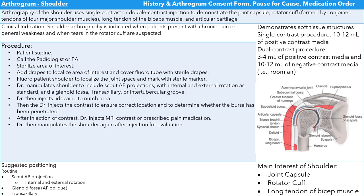For the procedure, the patient is going to be supine. You'll call your doctor, sterilize the area, add drapes to your area of interest and the fluoro tower. The patient should be localized and marked with a sterile marker. The doctor will manipulate the shoulder; AP projections used may include internal and external rotation. Sometimes the glenoid fossa (Grashey view) is used, and sometimes a transaxillary or intertubercular groove or sulcus image. The doctor will inject lidocaine to numb the area, then inject contrast to ensure location and determine whether the bursa has been penetrated. After injection, the patient is usually sent for MRI and may be prescribed pain medication.